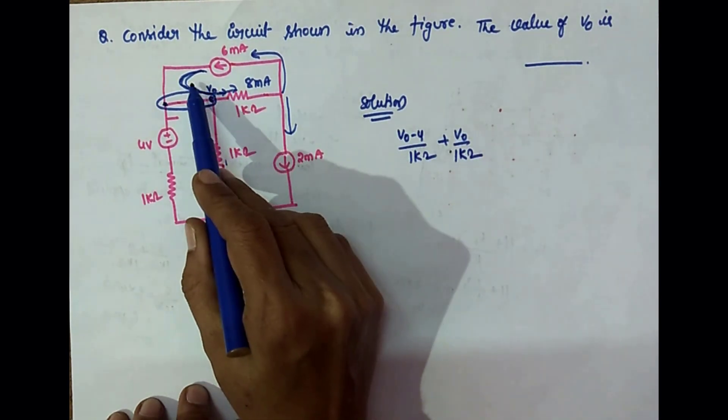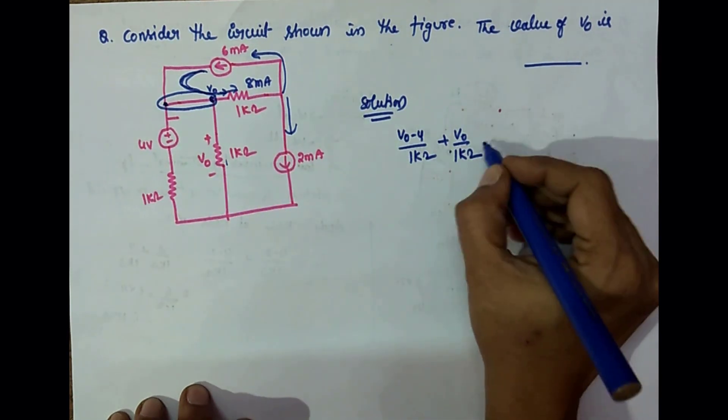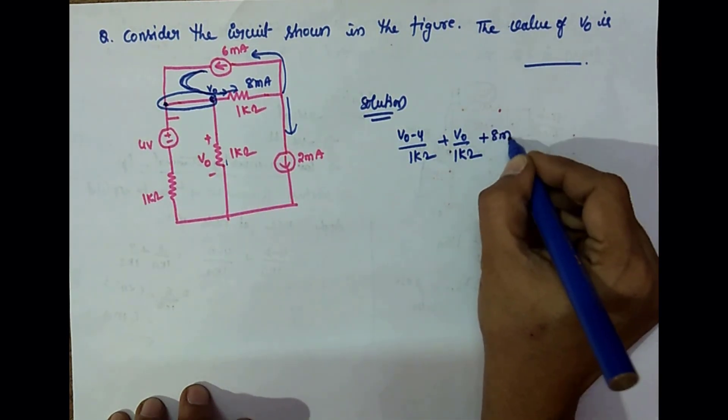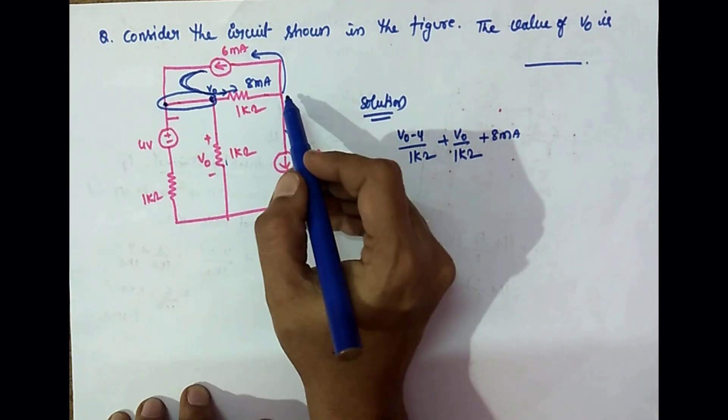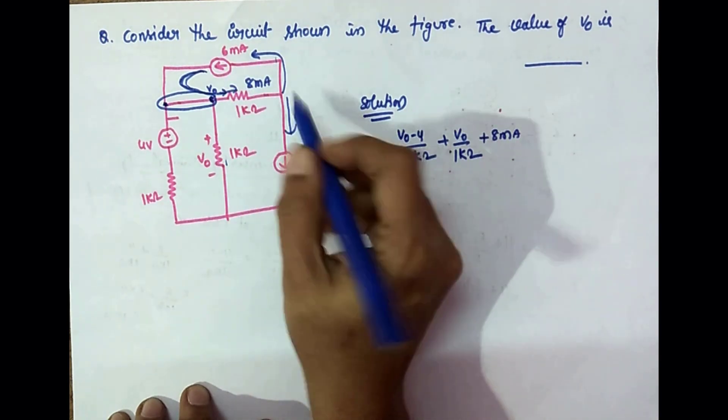From this node, 8 mA current is leaving, so plus 8 mA. That 8 mA current is divided like 6 mA and 2 mA.